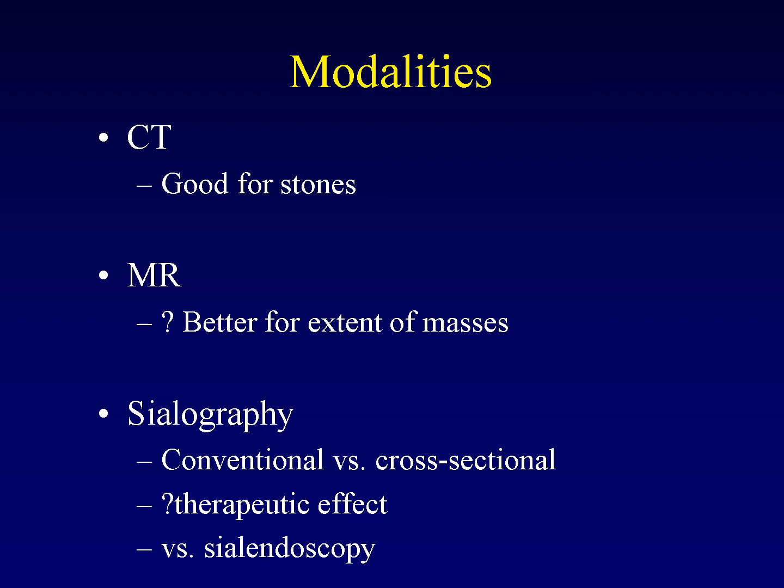Sialography can be performed conventionally using fluoroscopy during contrast injection, or in a cross-sectional manner where contrast is administered and then cross-sectional images using MRI or CT are obtained. Sialography has been presumed to have a therapeutic effect in that it can rinse out thick secretions from the gland and duct, although this has not been proven effective.